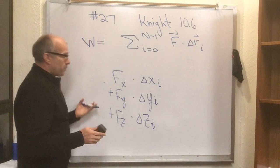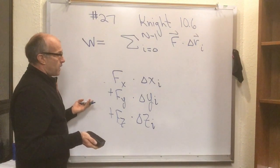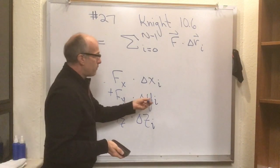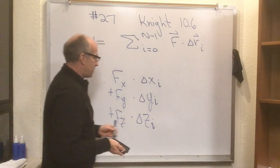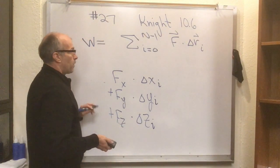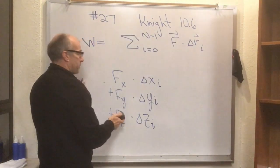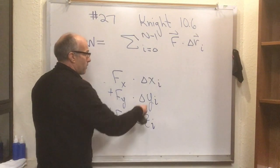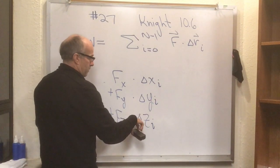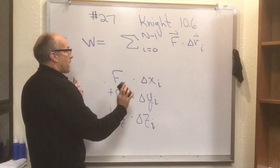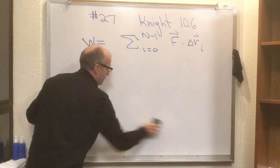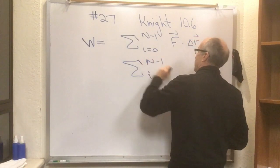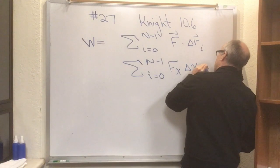The special case is nice because if the particle is only moving back and forth in the x direction, it's not moving at all in the y or z directions. So whatever the force components F_y and F_z are, they don't matter — they get multiplied by delta-y_i equals zero and delta-z_i equals zero. So if the particle is moving on a track in x only, the sum simplifies to: sum from i equals zero to n minus one of F_x times delta-x sub i.